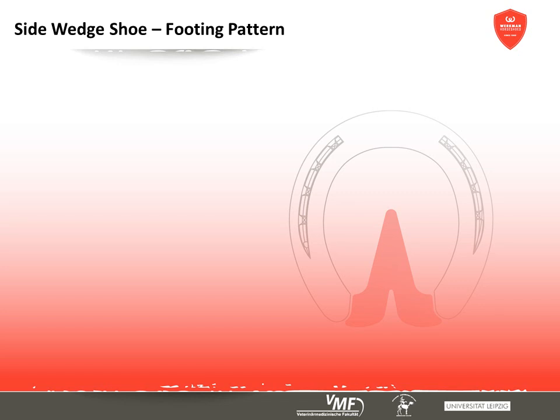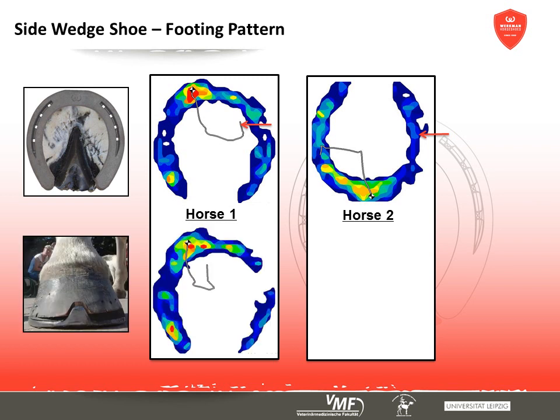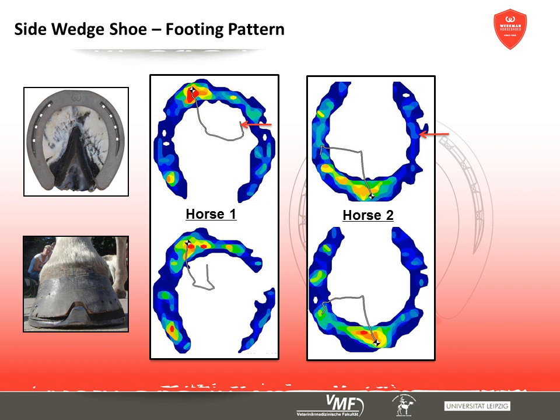All horses in this study showed different individual footing patterns. In the following examples, both horses foot over the medial wall, with the side wedge positioned beneath the lateral half of the hoof. In response, the pattern of one horse shifted to a more planar footing, whereas the second horse showed absolutely no reaction regarding the footing pattern after application of the side wedge shoe. The effect on individual footing patterns differed among the rest of the examined group as well.